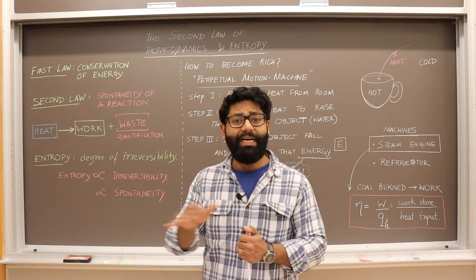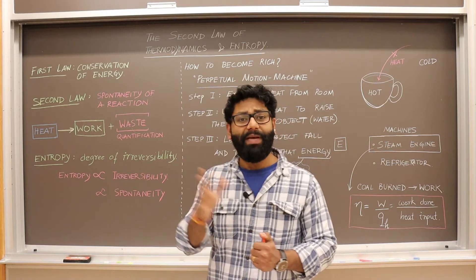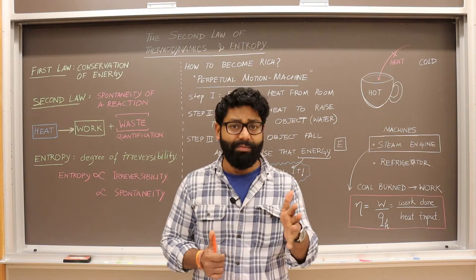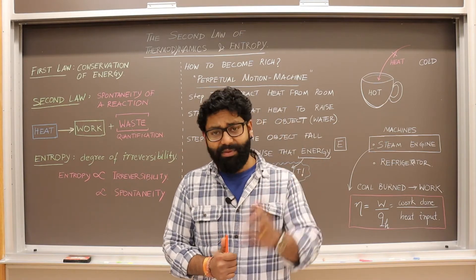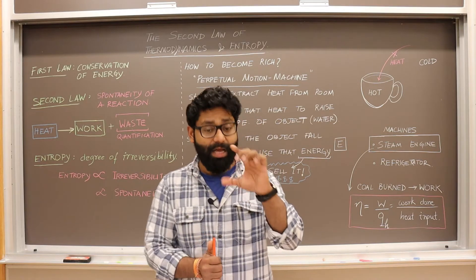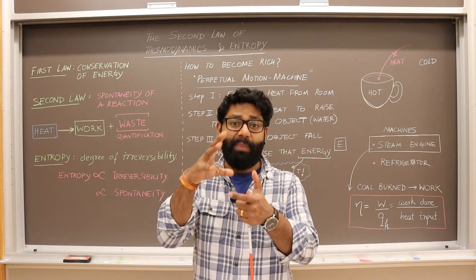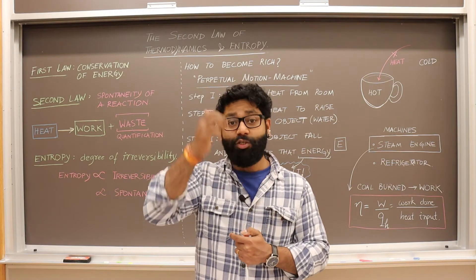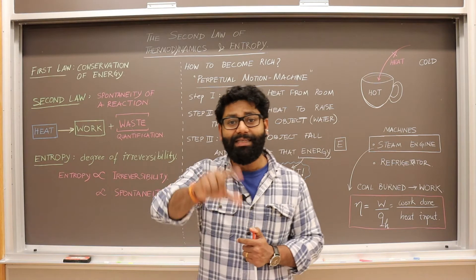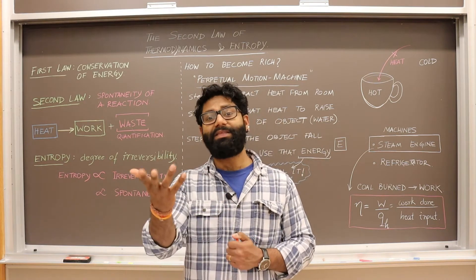When we were reading about the first law, we started off by reading some basic concepts like a system. An open system and a closed system. A system is anything that is under consideration — that part of the universe which you are trying to observe. Anything other than that system is called the surroundings.